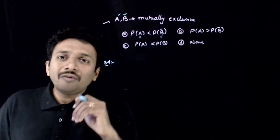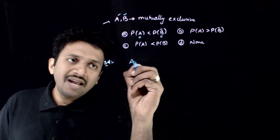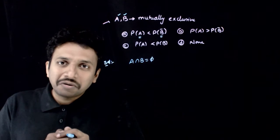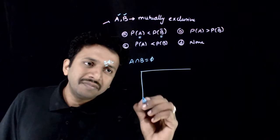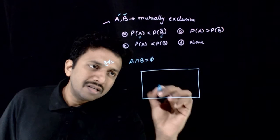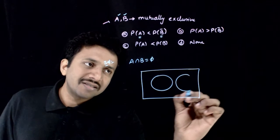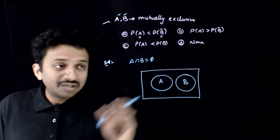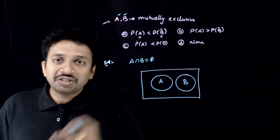What is the meaning of mutually exclusive events? That is A intersection B equals phi, meaning A and B do not have any element in common. If you draw the Venn diagram, this is my event A, this is my event B. There is no intersection between these two events.